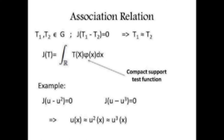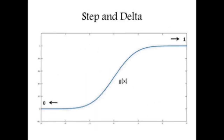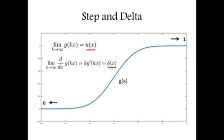For example, we can associate u^n with its square or its cube, so we can associate these three elements in the algebra G. We now return to our original question: what is the product of a step function and a delta function? There are infinitely many different step functions and infinitely many different delta functions, so the result depends on which distributions we multiply. To evaluate u^n × delta, we use a reasoning from Colombeau's original book. We take a smooth function g_k that goes from 0 to 1; the limit as k → ∞ of g_k(x) gives the unitary step function, and by differentiating this limit we get the delta function.